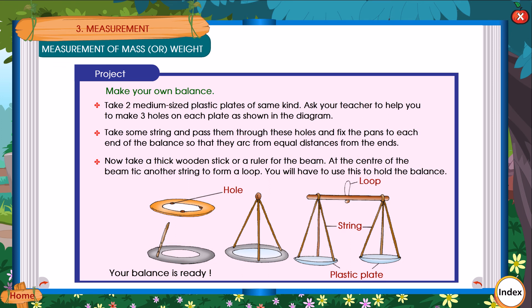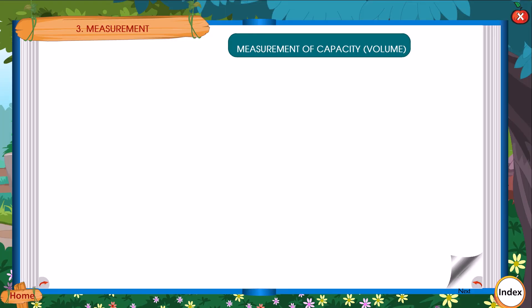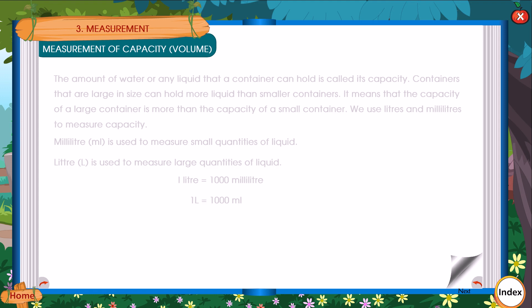Measurement of capacity (volume). The amount of water or any liquid that a container can hold is called its capacity. Containers that are large in size can hold more liquid than smaller containers. It means that the capacity of large container is more than the capacity of a small container.